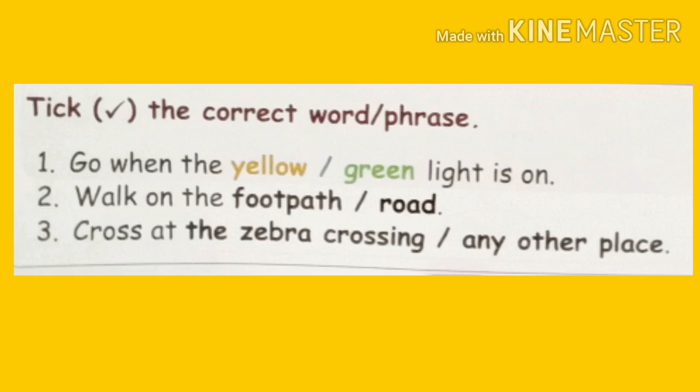Tick the correct word or phrase. Go when the light is on — which color signal should we go on? Green. When the green signal comes, we go. Walk on the footpath — where should we walk on the road? On the footpath. Cross at the zebra crossing — where should we cross? At the zebra crossing only, we must cross the road.